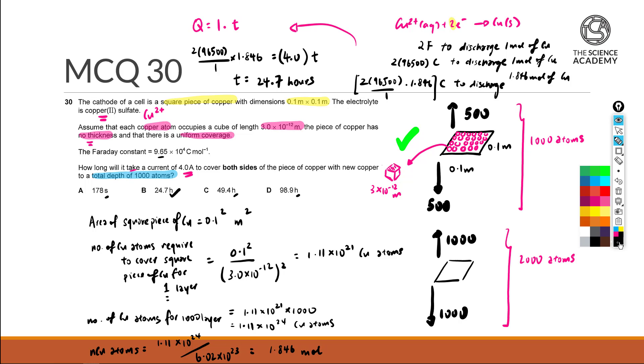Now however this is for the first interpretation over here. Now however if we would interpret it the other way, whereby there is a total depth of 2000, then definitely the time taken over here will actually be 24.7 multiplied by 2 to give us 49.4 hours.